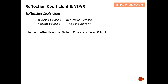The refracted current can be the same as the incident current, which is 1 over 1, or the refracted voltage can be the same as the incident voltage, which is again 1 over 1. So one extreme of the Refraction Coefficient range is equal to 1. On the other extreme, if there is no refracted current or no refracted voltage at all, then the Refraction Coefficient equals 0. So the Refraction Coefficient range is basically from 0 to 1.